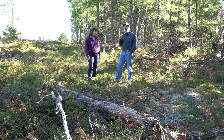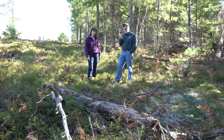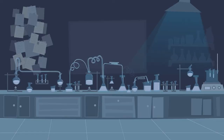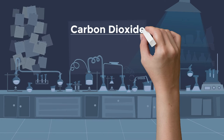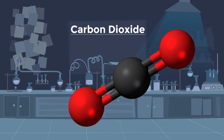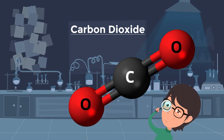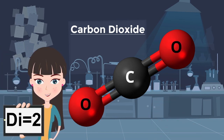And the real interesting story in all this is going to be about carbon dioxide. Carbon dioxide is a molecule that's made up of one atom of carbon — that's right here in the middle — and two atoms of oxygen. So that's why we call it carbon dioxide.